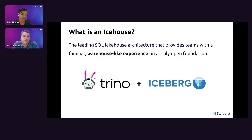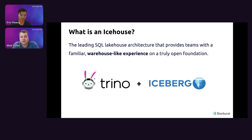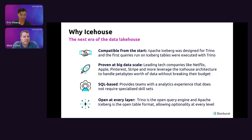To start, we're going to talk about the Ice House architecture. An Ice House is the leading SQL lake house architecture that provides your teams with a familiar warehouse-like experience on a truly open foundation — Trino for the query engine and Iceberg for the open table format where your data is stored. This is the next era of the data lake house.